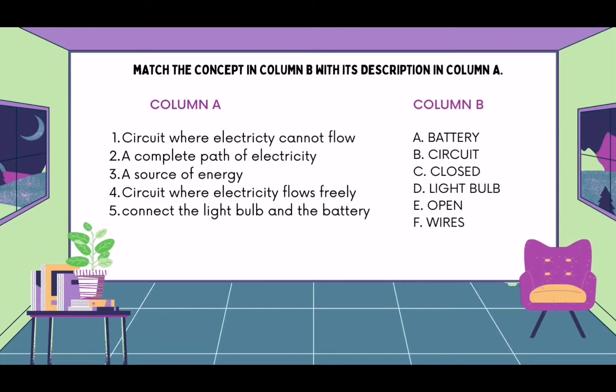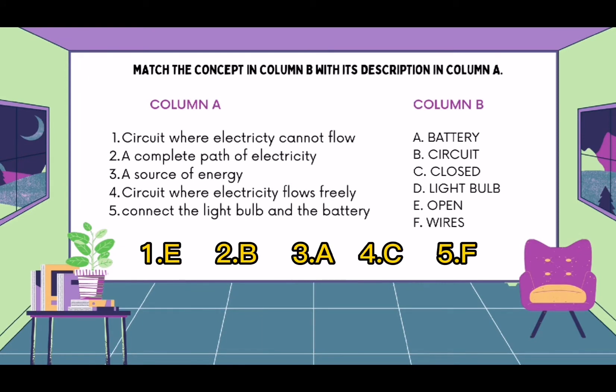Ngayon ay pagtambali natin ang concept na nasa column B sa kanyang description na nasa column A. Number 1, a circuit where electricity cannot flow is an open circuit. Number 2, a complete path of electricity is called circuit.